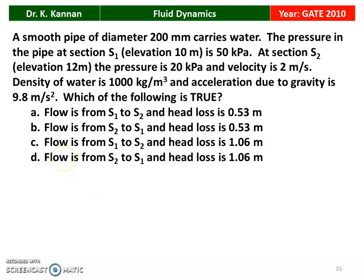The first question is from Gate 2010. A smooth pipe of diameter 200 mm carries water. The pressure in the pipe at section S1 at an elevation of 10 meters is 50 kilopascal. At section S2, elevation is 12 meters and pressure is 20 kilopascal. Velocity is 2 meters per second. The density of water is 1000 kg per meter cube and acceleration due to gravity is 9.8 m/s². Which of the following is true?